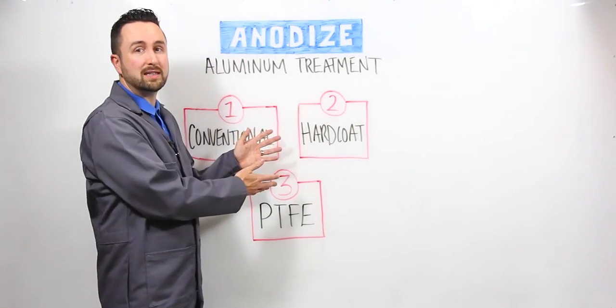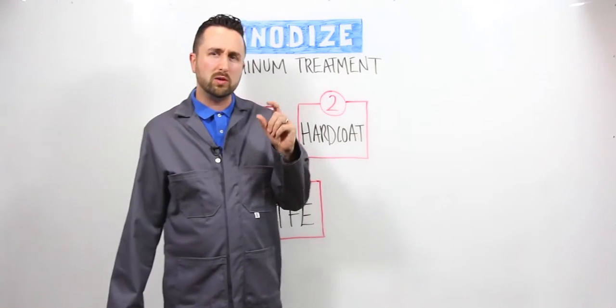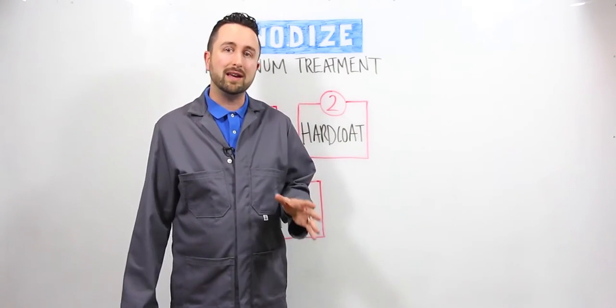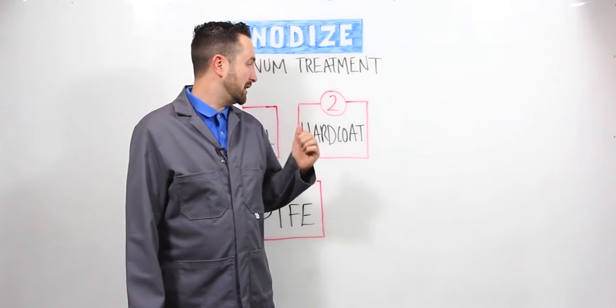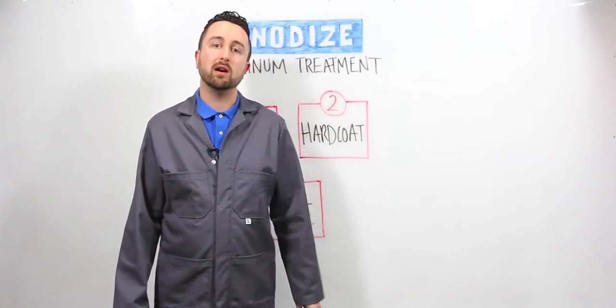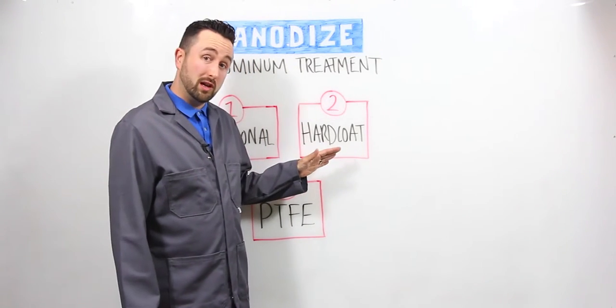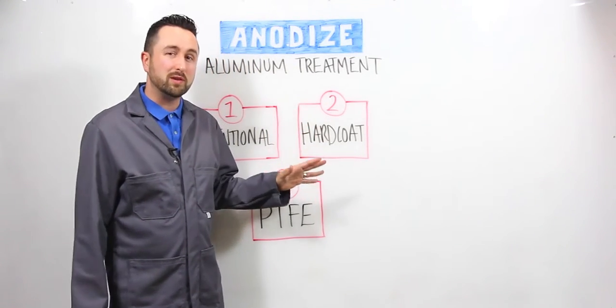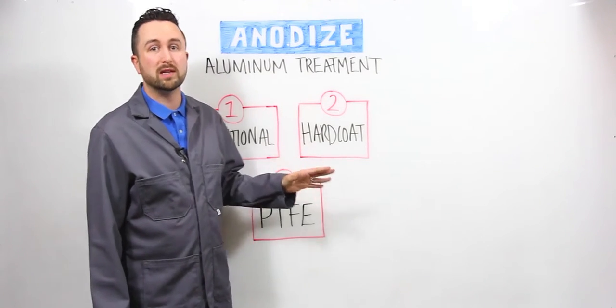Hard coat anodizing is typically about 2 mils thick. It is a very hard and very dense surface layer which imparts excellent wear resistance onto aluminum. It is not a friction reduction coating and it is not a particularly excellent mold release coating.